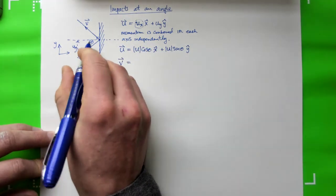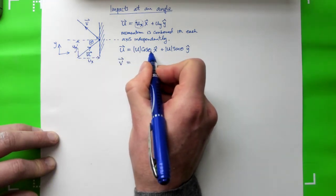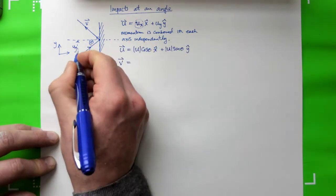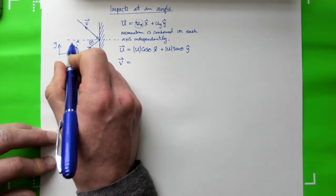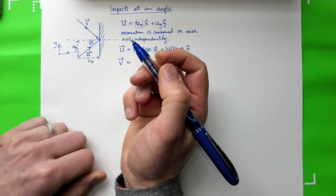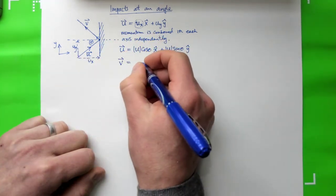Well, in the x-axis we know that U cos theta, if it's conserved and the mass of the object doesn't change, the velocity in the other direction is going to be the same, except for Newton's experimental law. So let's write that down now.